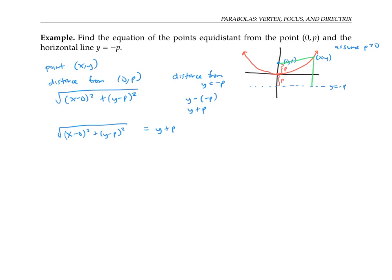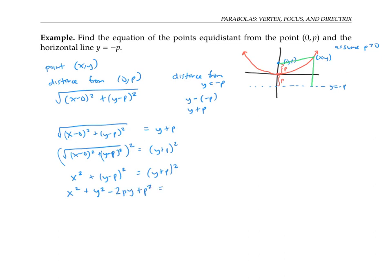Let me set these two quantities equal to each other and simplify. I can square both sides to get x squared plus y minus p squared equals y plus p squared. Now I'll distribute: that gives me x squared plus y squared minus 2py plus p squared equals y squared plus 2py plus p squared. The p-squareds cancel out, as do the y-squareds, and I'm left with x squared equals 4py, after moving the negative 2py to the other side.